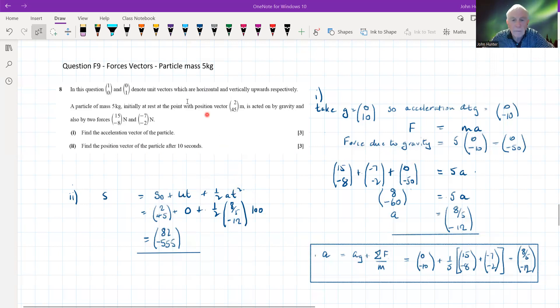In vector problems, we often are given a starting displacement. Sometimes one of these components is zero, but in this case, neither of them are. So we do need to take this into account. If we put this on the left-hand side of the equation, it would be S minus S naught, so it would be the change in displacement. That's kind of more or less what we're looking at.